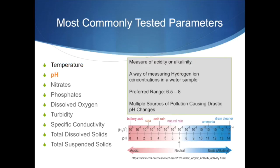pH is basically the measure of acidity or alkalinity — how acid or basic something is. The lower the number on the pH scale, the more acidic it is, and the higher the number on the pH scale, the more basic or alkaline it is. Neutral pH is considered to be 7.